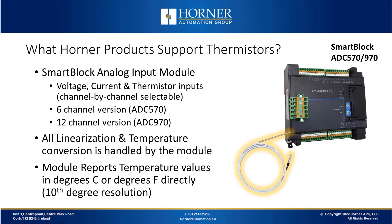Now we'll look at specific Horner products which support thermistors. Starting with the smart block analog input modules, the ADC570 and ADC970 — one is 6 channel and the other is 12 channel, but they have the same specifications. They both support voltage, current, or thermistor as inputs on each channel, selectable channel by channel, and the module handles all the linearization and conversion to temperature on board. Temperature values reported by the module are in degrees Celsius or degrees Fahrenheit, reported in tenth-degree increments.